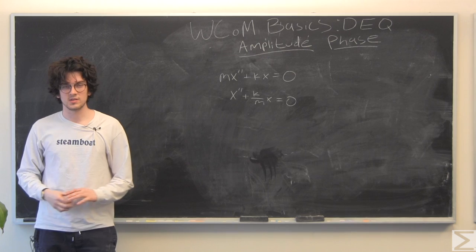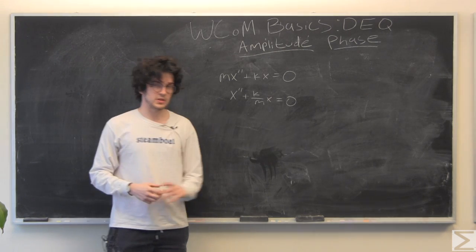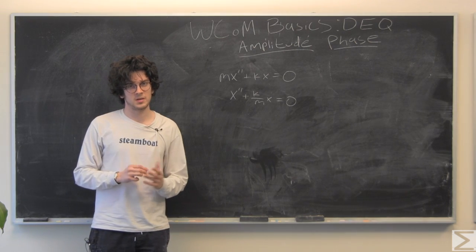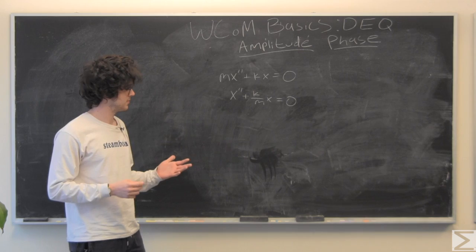One thing we're going to notice is that k over m is exactly equal to omega squared, which is a variable you might know from physics, which is angular velocity.